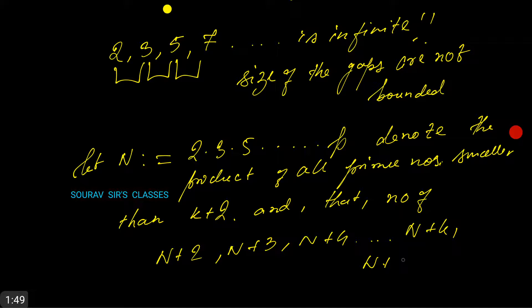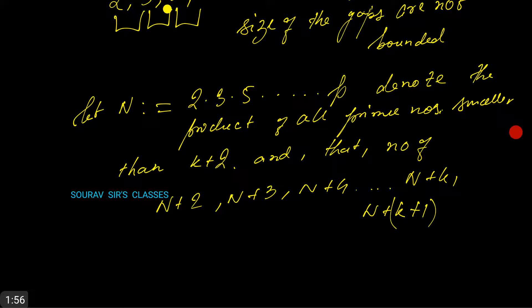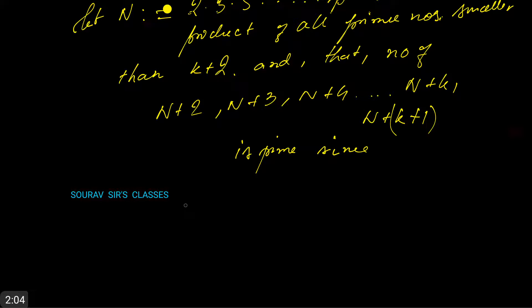Since for 2 ≤ i ≤ k+1, we know that i has a prime factor that is smaller than k+2.